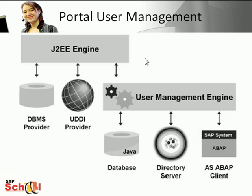This is the high level architecture for portal user management. The AS Java application server Java provides an open architecture based on service providers to store user data and group data. The application server Java, represented by the J2EE engine, is delivered with the following service providers called user stores. You have the DBMS provider — which indicates storage in the system database — the UDDI provider — which is storage via external service providers, where UDDI stands for Universal Description, Discovery and Integration — and finally the user management engine provider, which is the connection of the integrated user management engine defined by SAP.